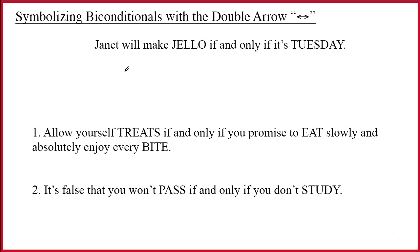This video covers symbolization of biconditionals. Biconditionals are sentences which include the logical phrase 'if and only if' and its logical synonyms. The biconditional is symbolized using the double arrow. Some textbooks use the triple bar instead of the double arrow, but the triple bar and double arrow are the very same thing in logic.